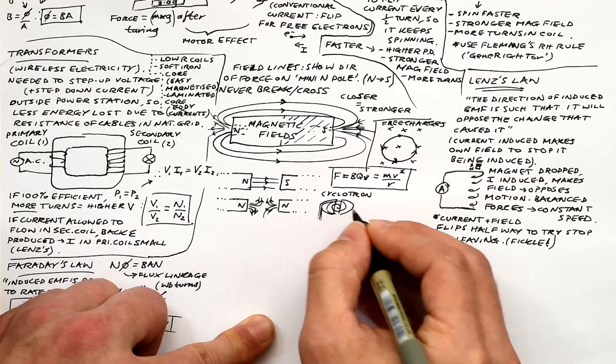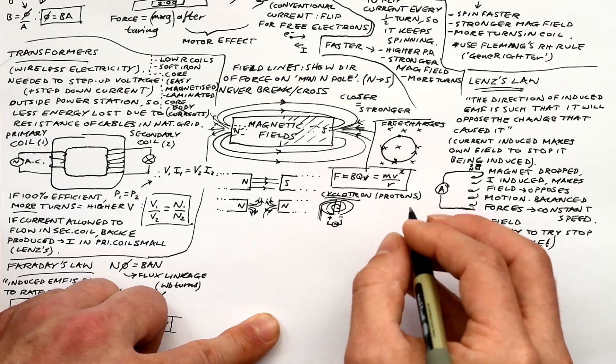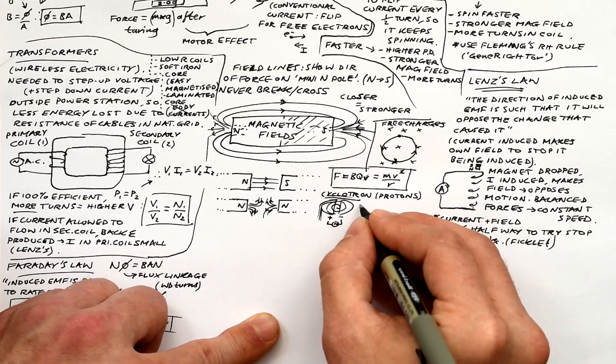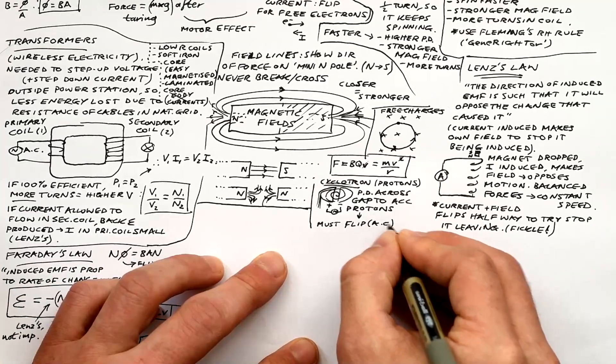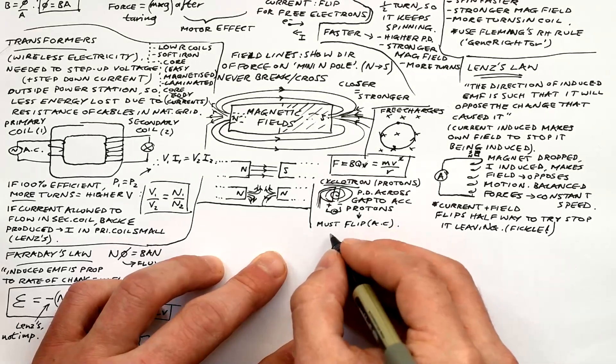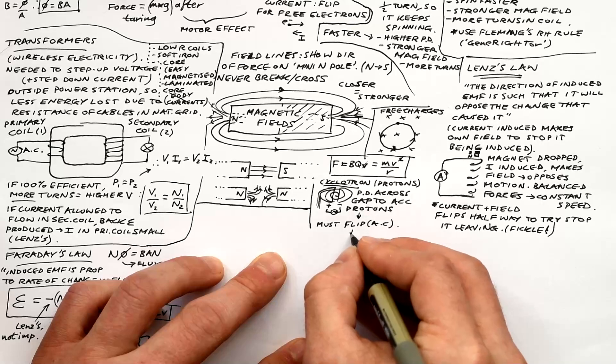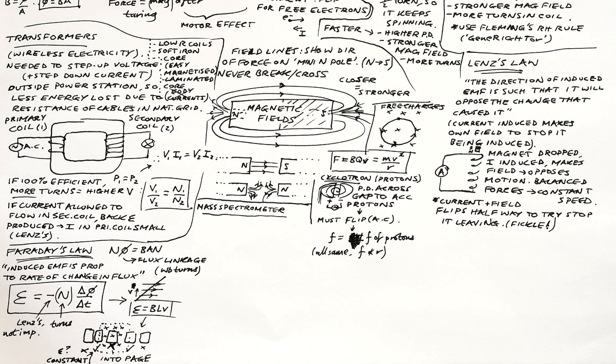Cyclotrons are used to make beams of particles like a proton beam for therapy in a hospital. And we have two D's and we apply a PD across them, and that's in order to accelerate the protons as they cross the gap. And their radius increases. But we must make sure we flip the polarity of the D's every half an orbit of these protons.